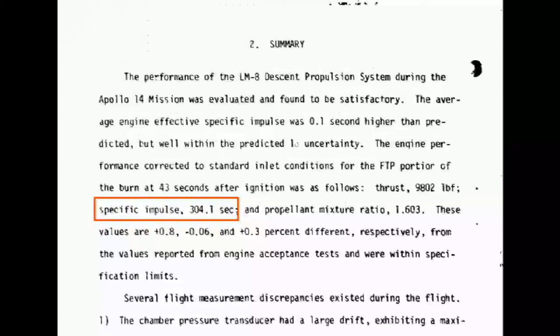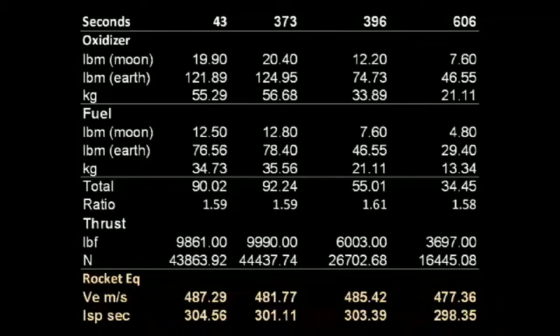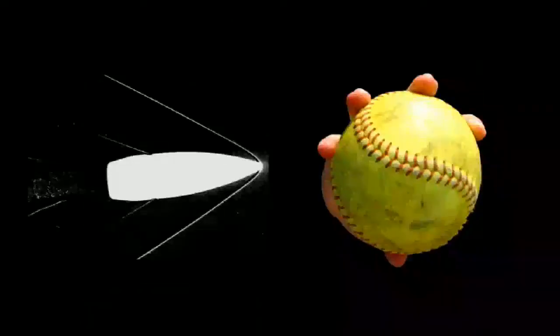Take this report for the Apollo 14, for example. There's even a table of performance data in the middle of the report that lists the specific impulse at four different times during the descent. The effective velocity is closer to 480 m per second than to 3200 m per second. This turns Gilliam's blazing bullet into a slow-pitch softball.